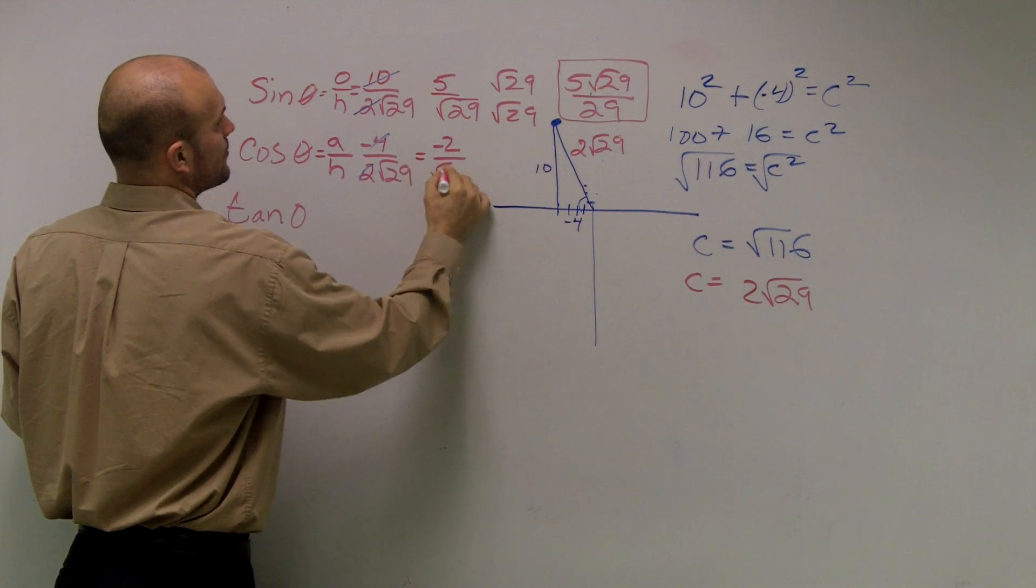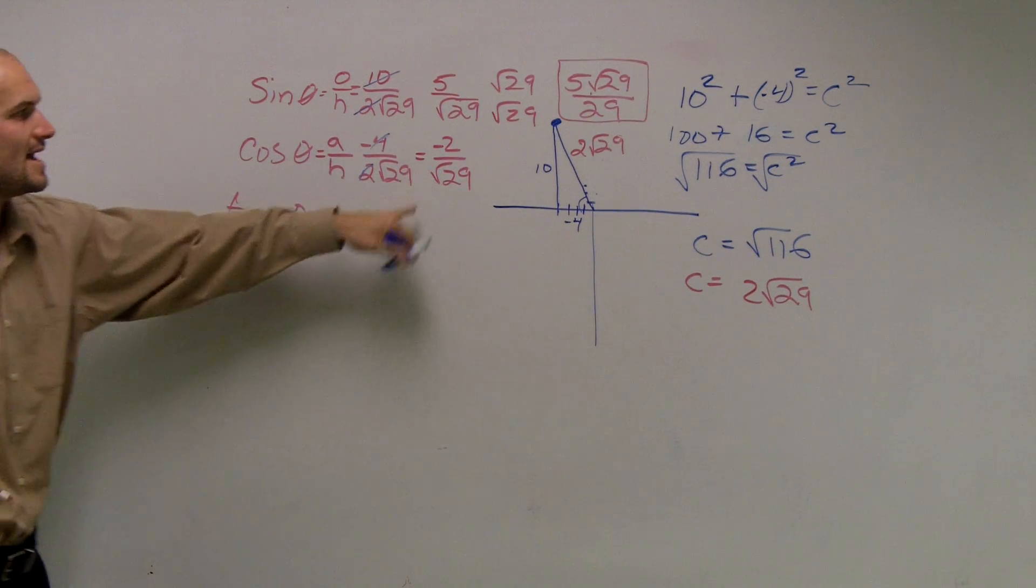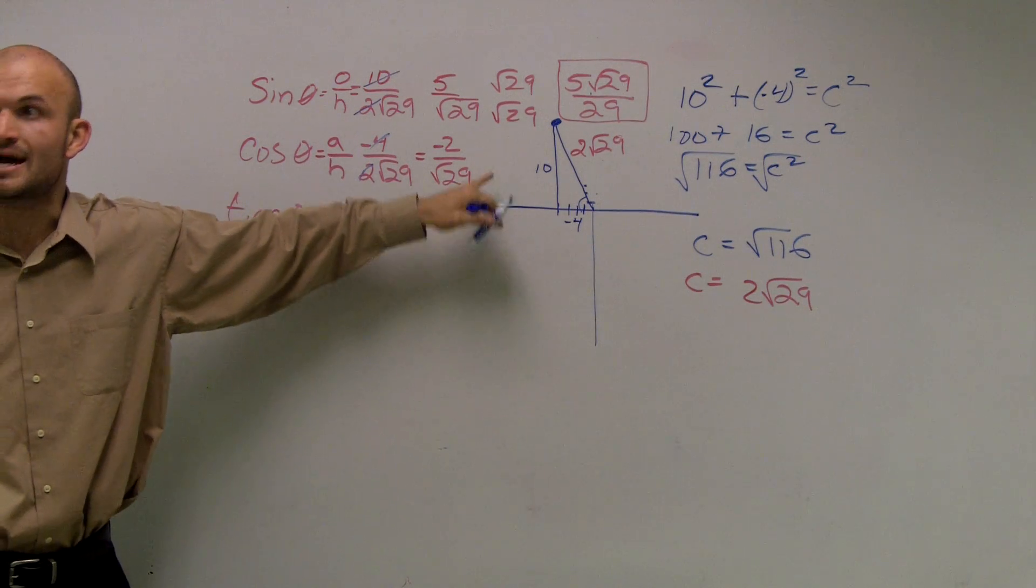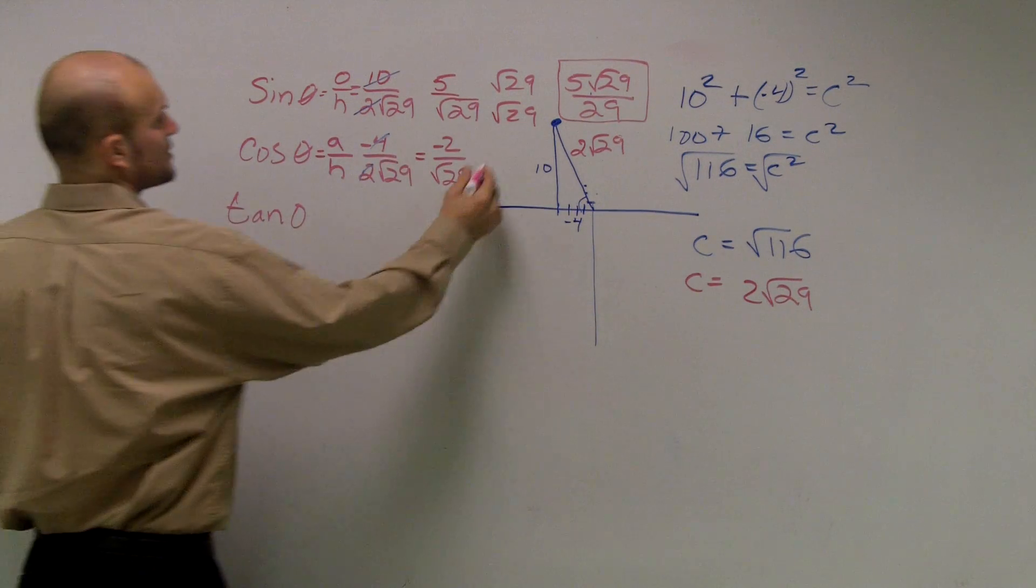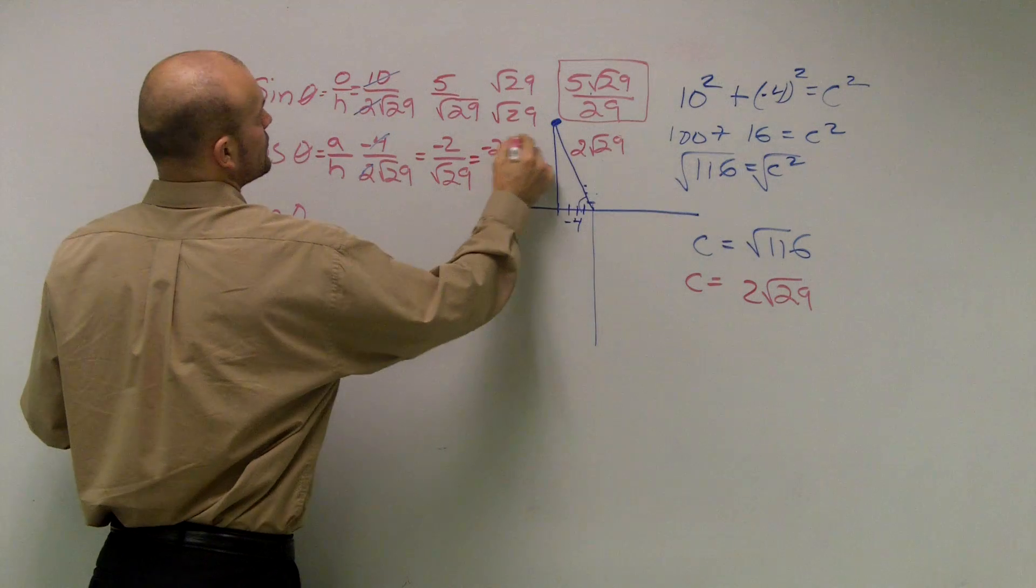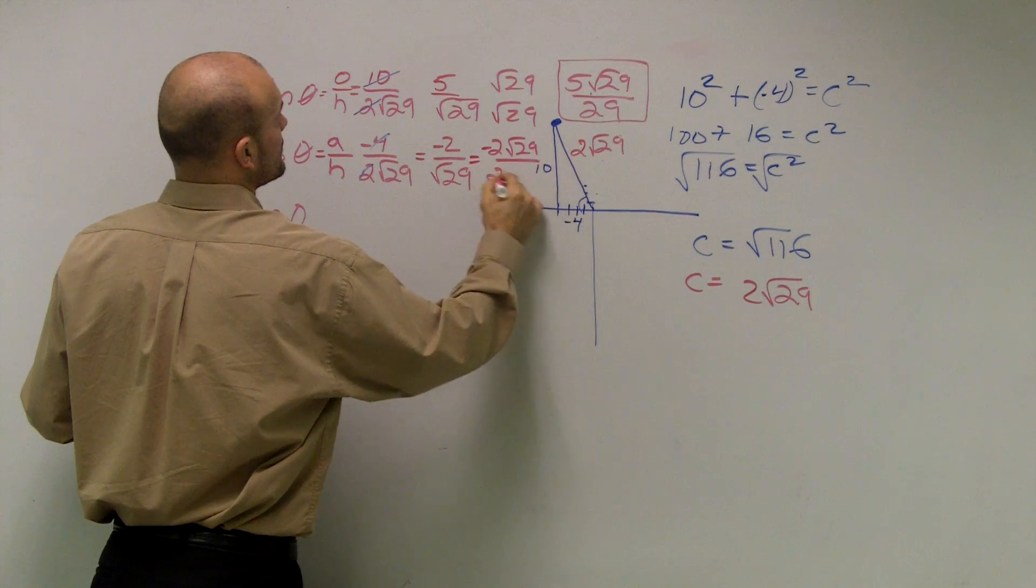negative 2 over radical 29. And again, when you rationalize the denominator by multiplying the square root of 29 on the top and the bottom, what you'll get is negative 2, radical 29, over 29.